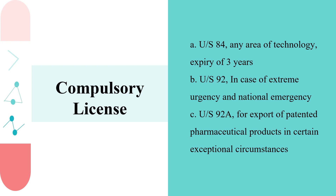Under Section 92, a compulsory license to manufacture and sell the product is granted to any company which applies for such a license, and this license is granted in cases of extreme emergency or national emergency — for example, COVID-19 can be considered an extreme emergency situation in which a compulsory license may be granted to a company that has manufacturing capacity to make a product used for treatment of COVID-19. Under Section 92A, the grant of compulsory license is for export of patented pharmaceutical products in certain exceptional circumstances. I will now explain some case studies where these provisions were used in the past.